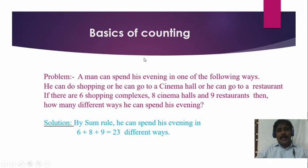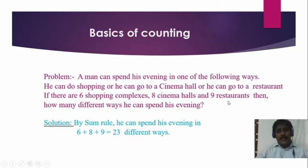Next problem: a man can spend his evening in one of the following ways — he can go shopping, go to a cinema hall, or go to a restaurant. If there are 6 shopping complexes, 8 cinema halls, and 9 restaurants, how many different ways can he spend his evening? By the sum rule: 6 plus 8 plus 9 equals 23 different ways.